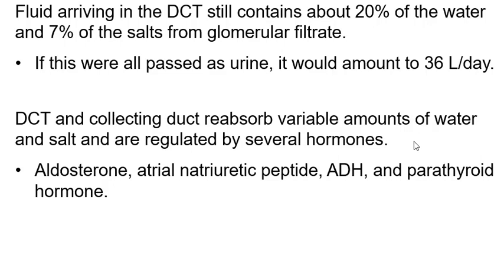Aldosterone, atrial natriuretic peptide, anti-diuretic hormone, and parathyroid hormone act on the distal convoluted tubule and collecting duct, causing you to either leave water in so you pee it out, or pull it back into the body. You've got to get 36 liters down to about one to two liters before it leaves the collecting duct and goes into the bladder.